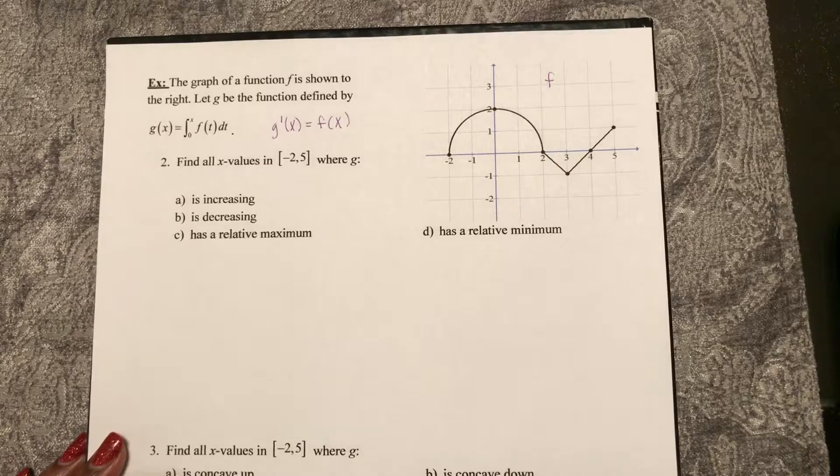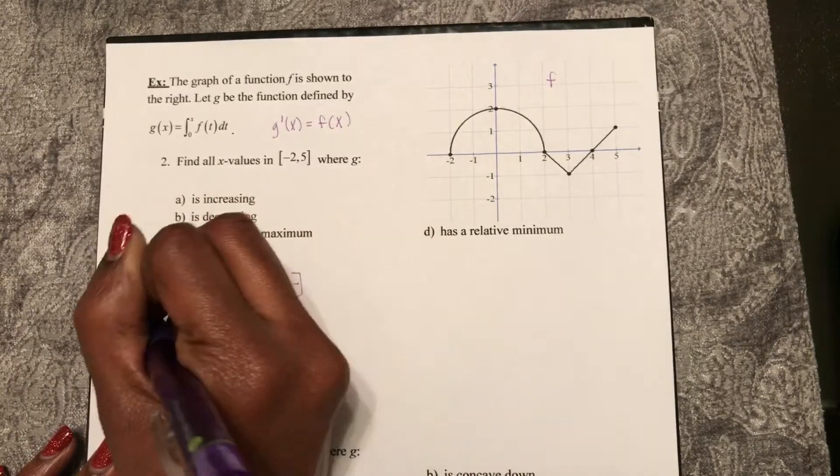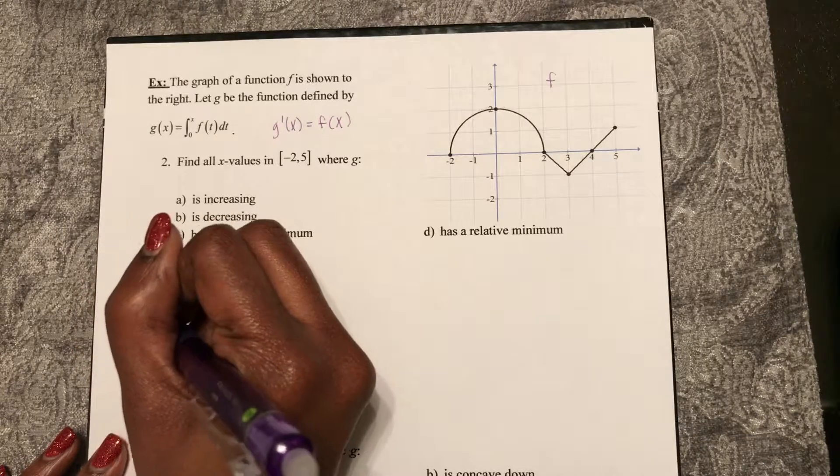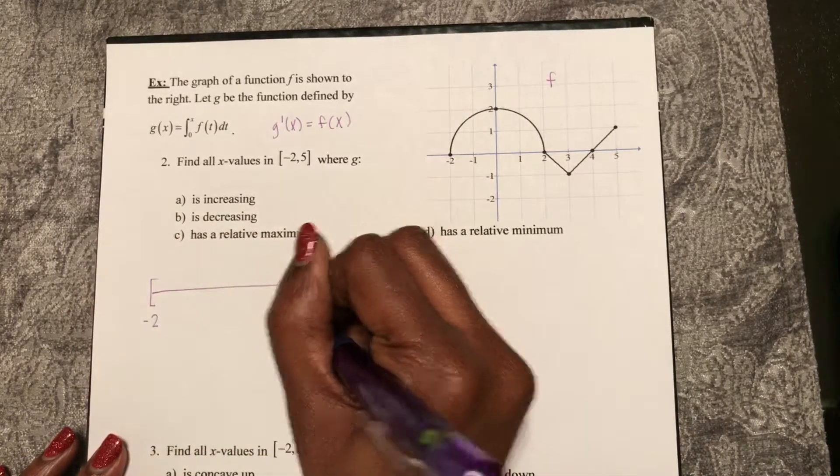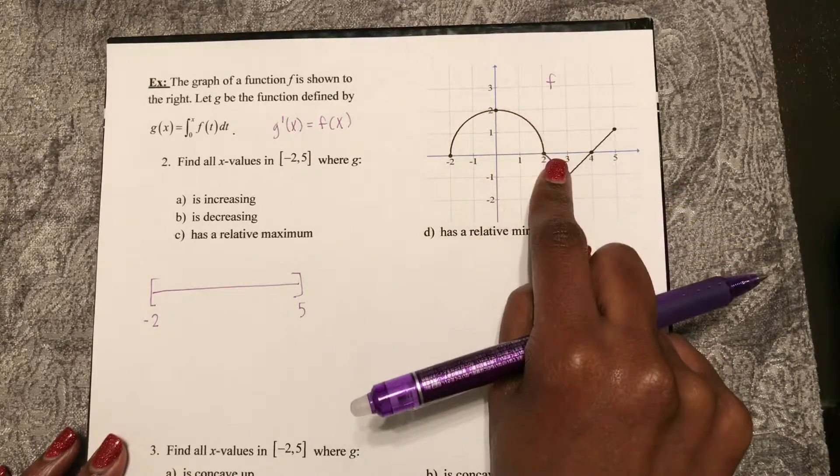So if that's the case, if I'm looking at my derivative from negative 2 until 5, I see that it's positive all the way until 2.